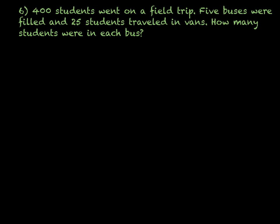The last example is another word problem. 400 students went on a field trip. 5 buses were filled completely, and 25 students traveled in vans. How many students were on each bus? First, write an equation. 400 students total went between buses and vans. There were 5 buses with p students on each bus, and 25 students in vans. So 5p plus 25 equals 400.